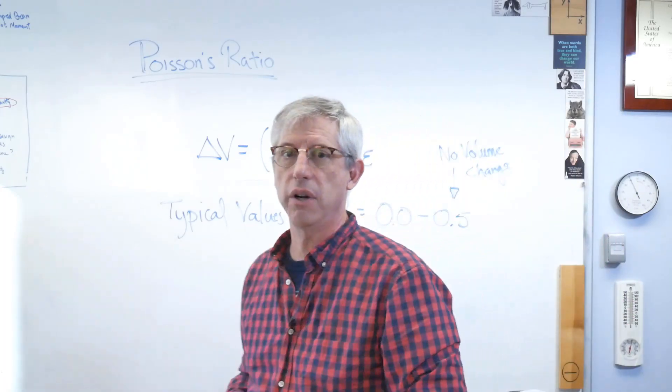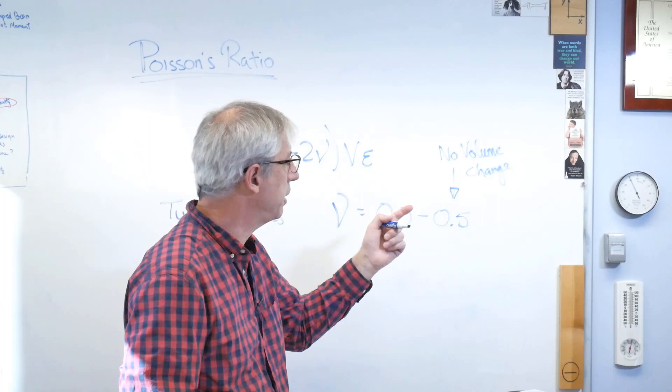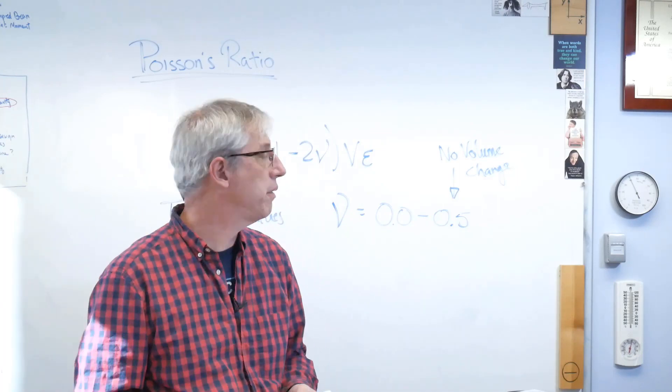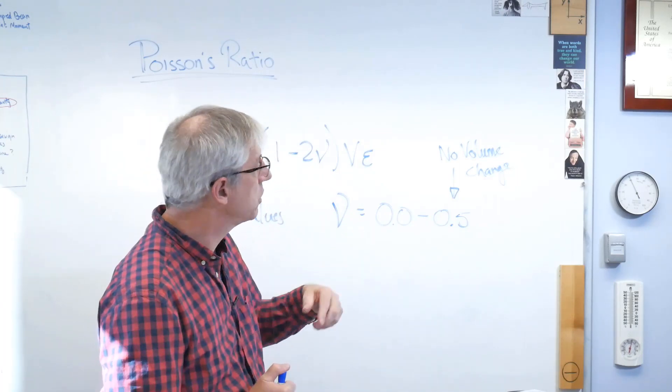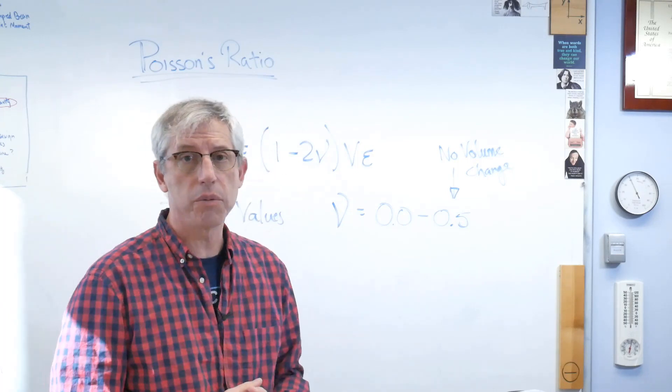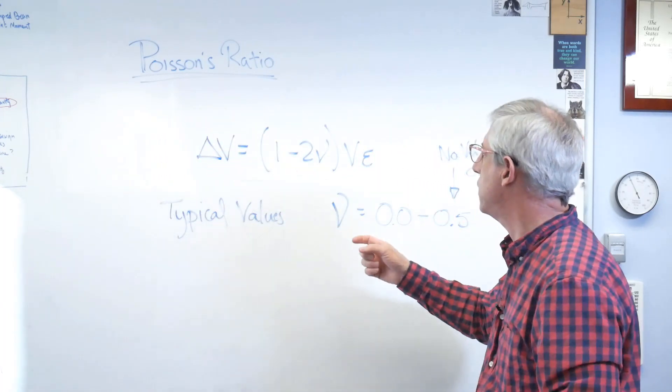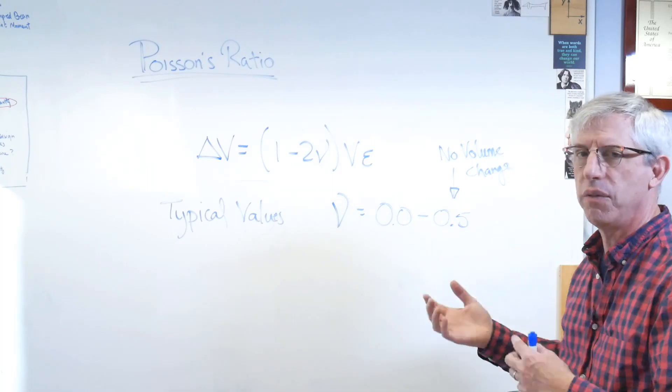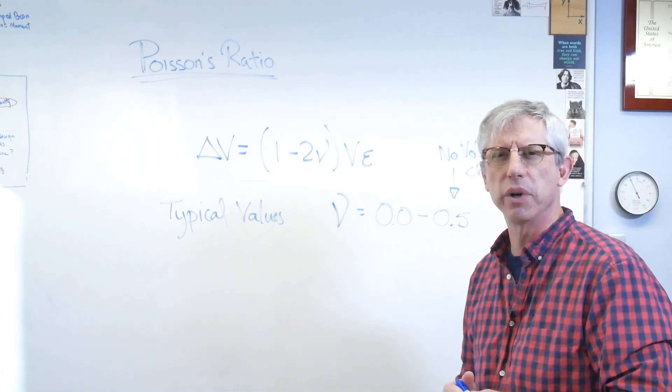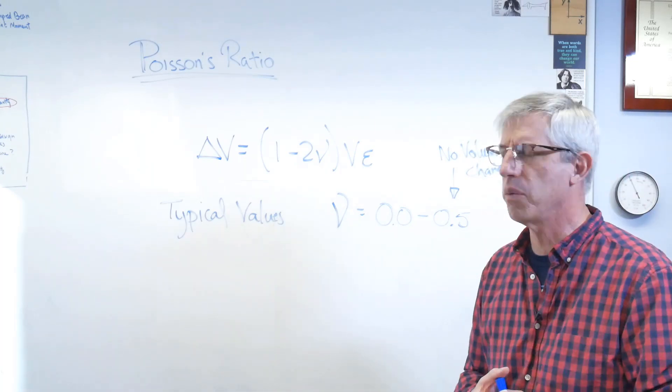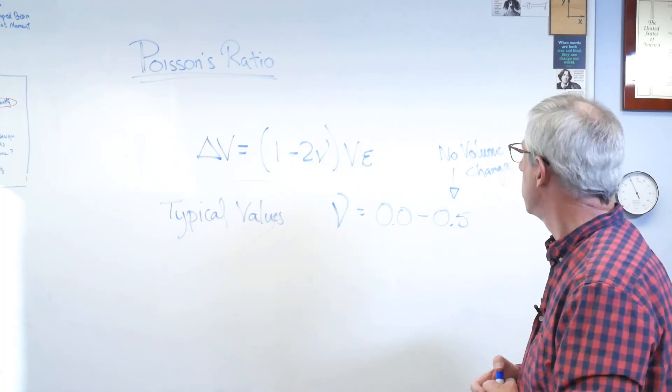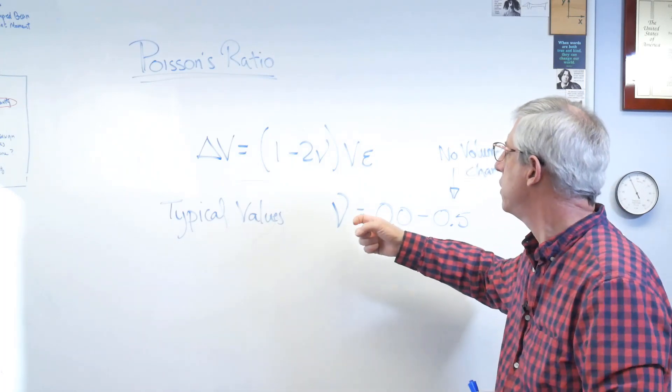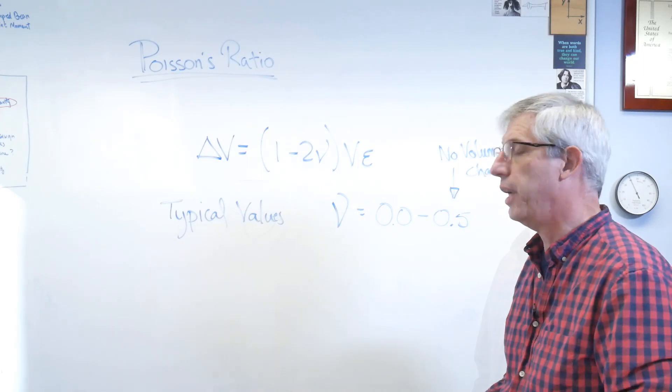And there aren't very many materials that are truly incompressible. You actually, if you look in the books, you actually see rubber is one of those. So for almost all metals, plastics, and things, you will have a volume change. And it's typical to see, the ones you see typically are, if nu is in the range of 0.2, 0.3, 0.4, those are pretty typical values. So this is the relationship that shows you the volume change.